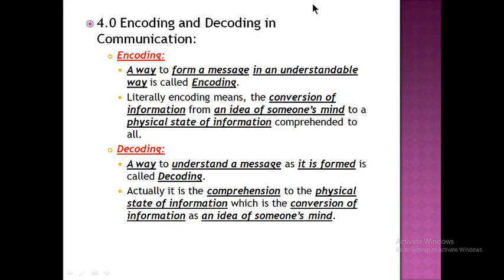The next topic is encoding and decoding. Before discussing this, please recall when I introduced the model of communication — these two terms were introduced there. The sender is responsible to encode the message and the receiver is responsible to decode the message. Encoding was done by the sender and decoding by the receiver. Encoding is a way to form a message in an understandable way — when you are adopting a certain way to make understanding clear to others, that is called encoding.